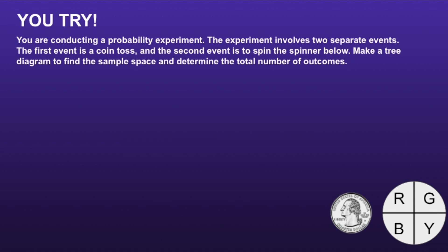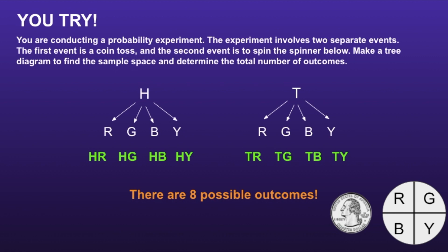Okay, let's take a look. There are eight possible outcomes. I would recommend you take a moment to pause the video and compare the tree diagram on the screen to the one on your paper. If you had any part of it incorrect, I would recommend you continue to pause and see if you can find your mistake. Thank you for watching!